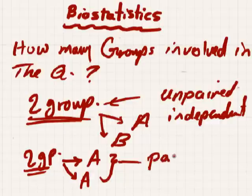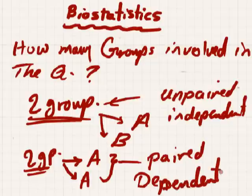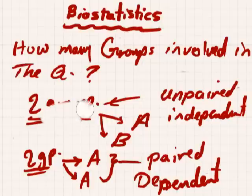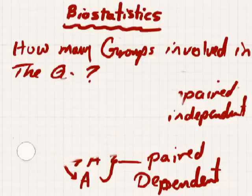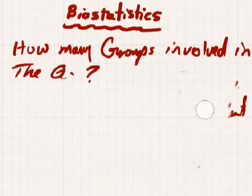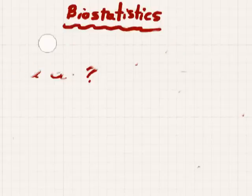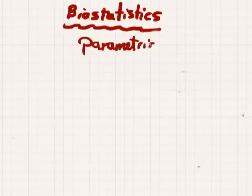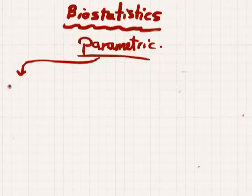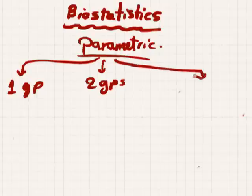So we have two groups that are either unpaired/independent or paired/dependent. There may also be more than two groups, or just one group. You should determine how many groups are in the data. For parametric data, you should determine if it is one group, two groups, or more than two groups.